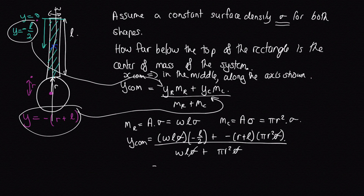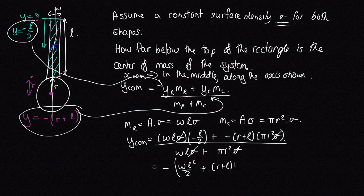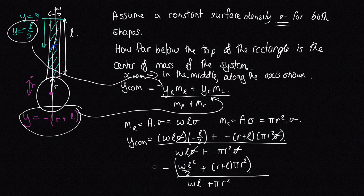So we have our expression for the centre of mass of this composite object, with the negative sign indicating it is below the reference point. You can apply this method to any composite object in order to find its centre of mass.